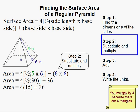So we have base times height times one-half. That's just the area of a triangle, right? Now we're going to multiply it by four because we have four triangles at the top. So that's all that is.